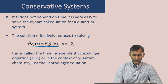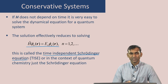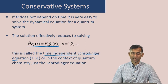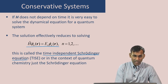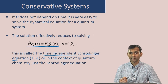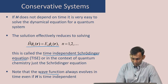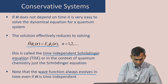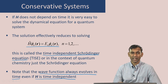This eigenvalue equation is called the time-independent Schrödinger equation, and sometimes in the context of quantum chemistry this equation is just called the Schrödinger equation. You have to know whether Schrödinger equation refers to this equation or to the dynamical equation, just based on context. Note that the wave function always evolves in time, even if the Hamiltonian is time-independent.